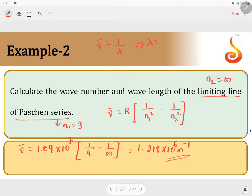Therefore, wavelength is equal to 1 by wavenumber. Therefore, lambda is equal to 1 by 1.218 into 10 power 6.